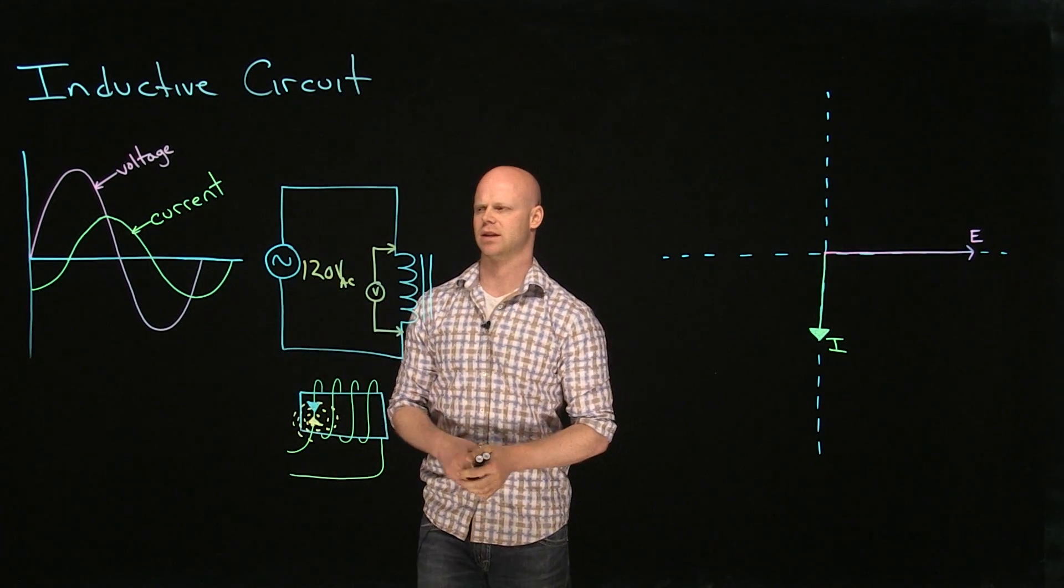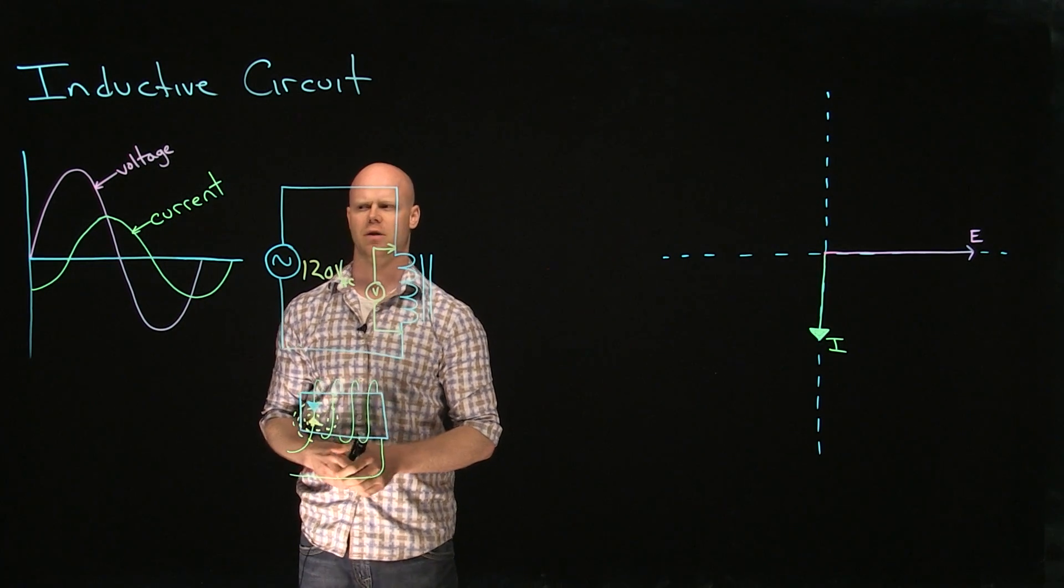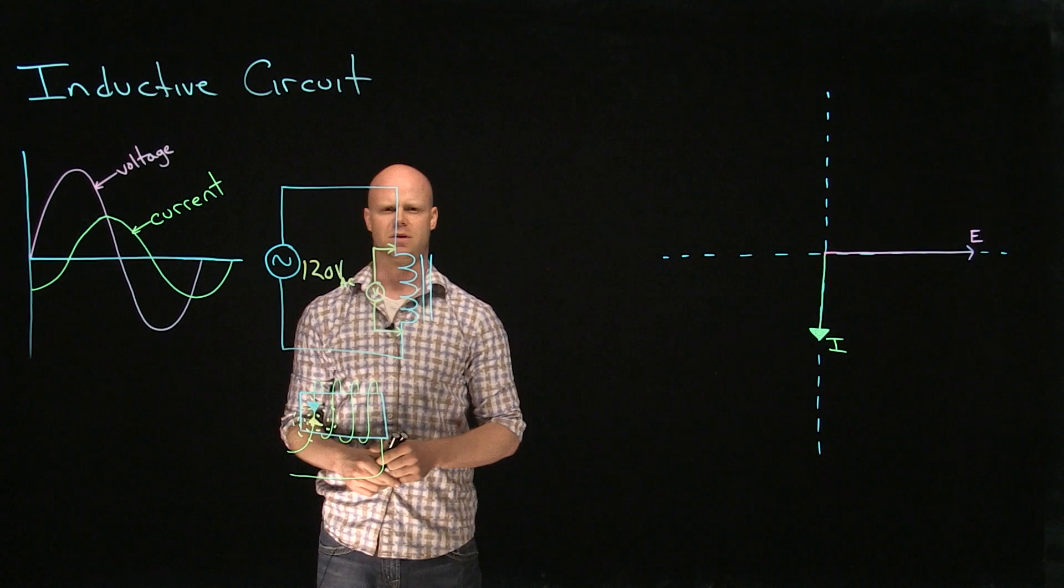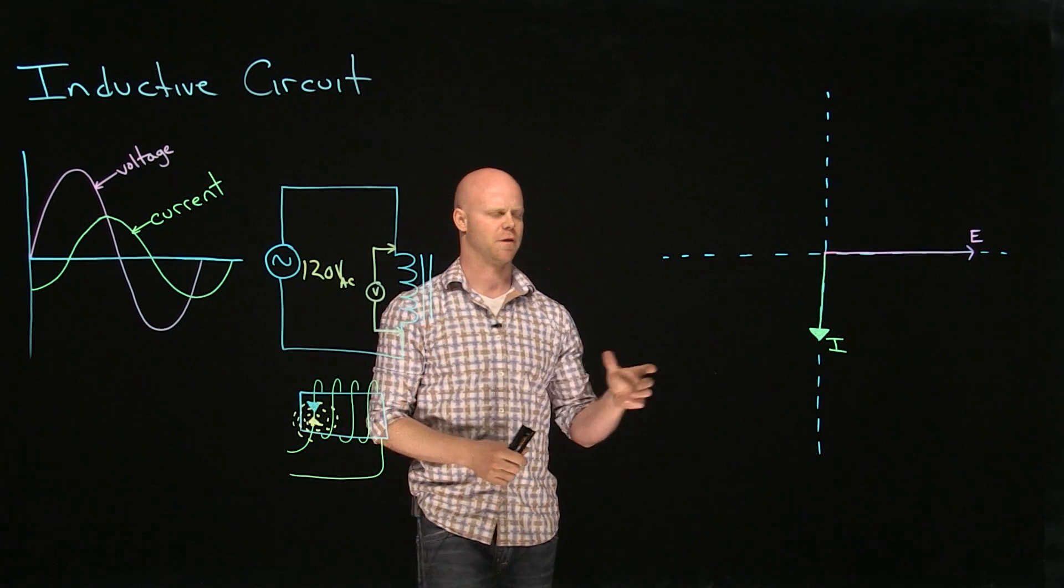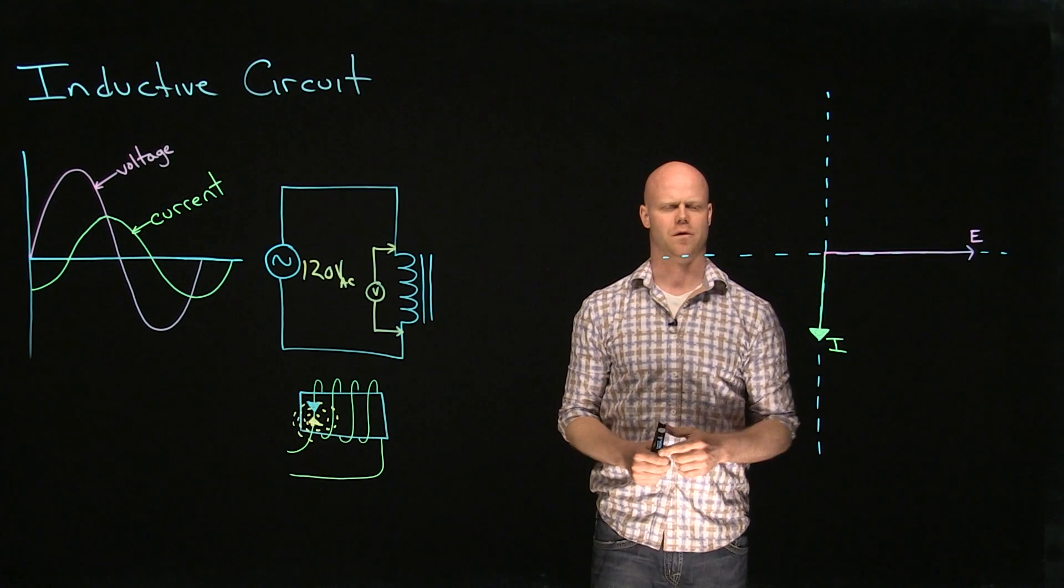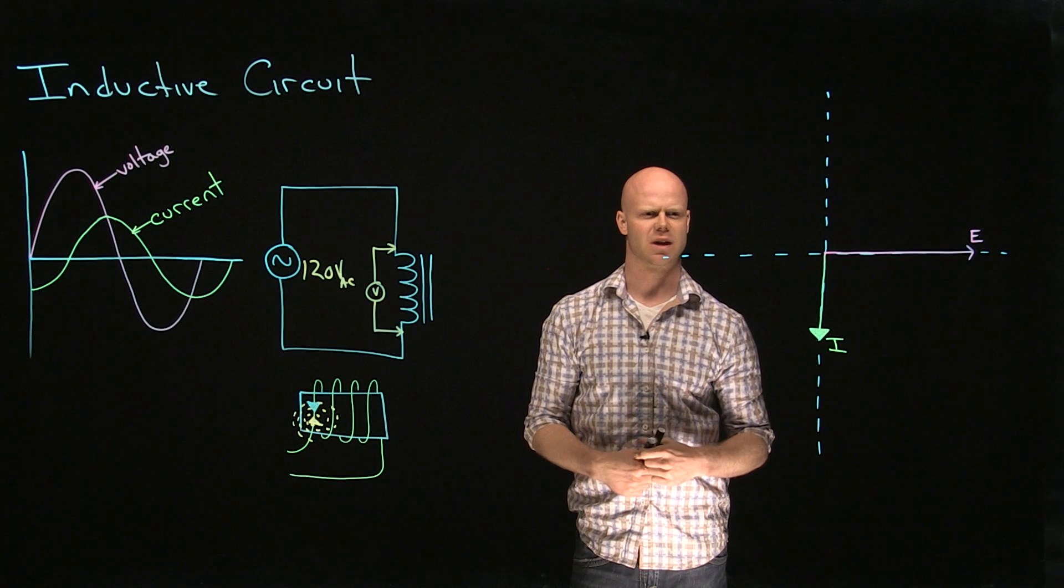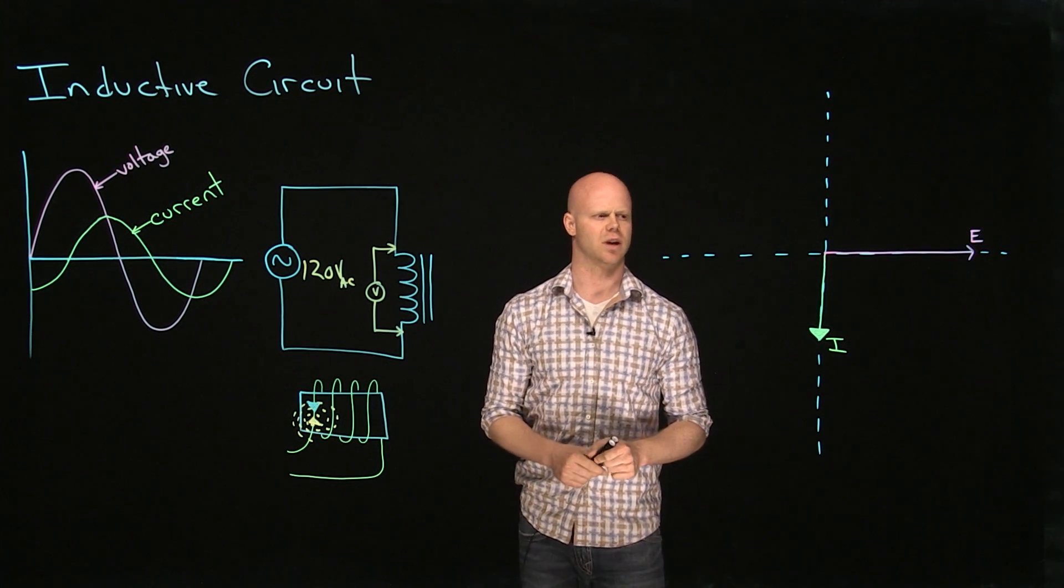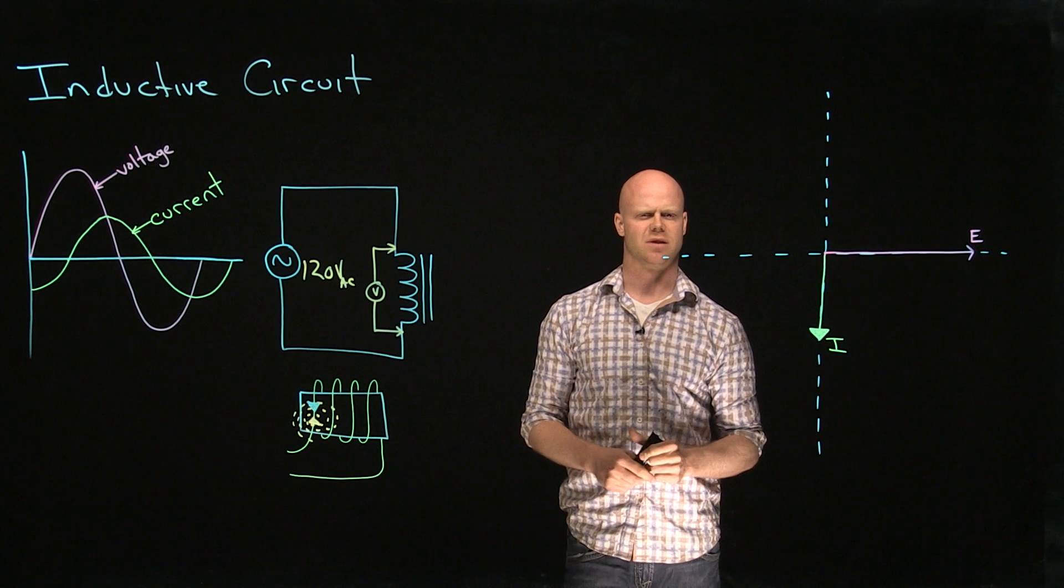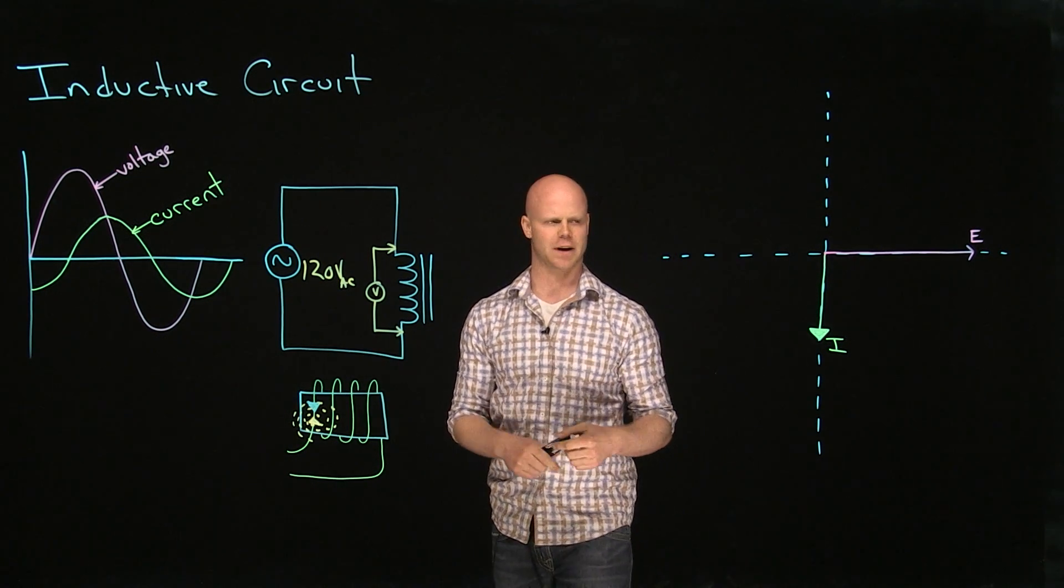So we look at this waveform, and we see that voltage is rising to its maximum value, and then current, after a period of time, current will rise to its maximum value. So on our phasor diagram, we can represent that exact same thing. I'm going to use voltage as my reference. So I'm going to place it at zero degrees. So that phasor represents the magnitude of the RMS voltage, and this current phasor represents the magnitude of the RMS current.